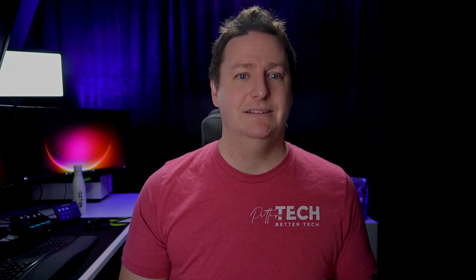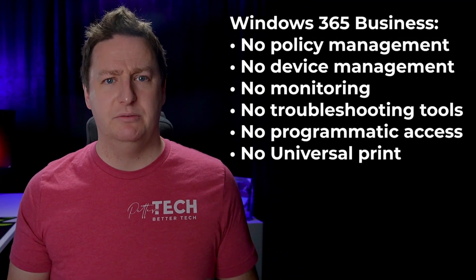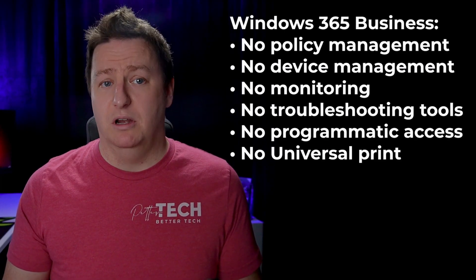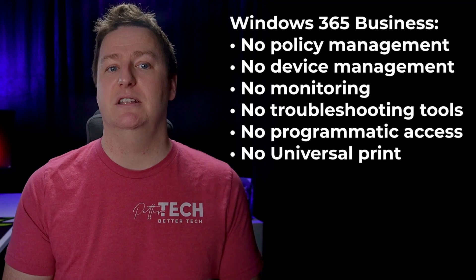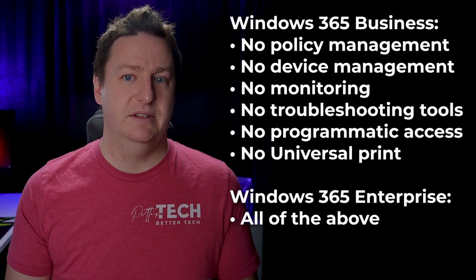From a user's perspective there is not a whole lot of difference between Windows 365 Business and Enterprise. The main thing would be the operating system their cloud PC runs — but how many users could tell the difference between Windows 11 Pro and Windows 11 Enterprise? From an admin perspective though, there are differences. Windows 365 Business has a simplified provisioning setup and only supports standard images, while Enterprise supports custom images and has a whole lot of customization options. Windows Business alone does not give you any policy management, device management, monitoring, troubleshooting tools, programmatic access, or the option to use Universal Print. You can add some management by adding an Intune license, but Enterprise has all of these from the get-go.